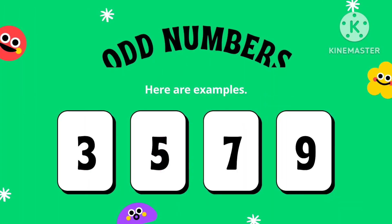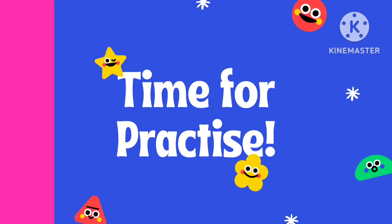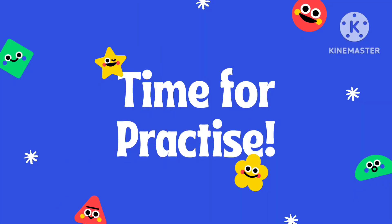Odd numbers: 3, 5, 7 are examples — they are not divisible by 2. Time for practice! Let's practice numbers.